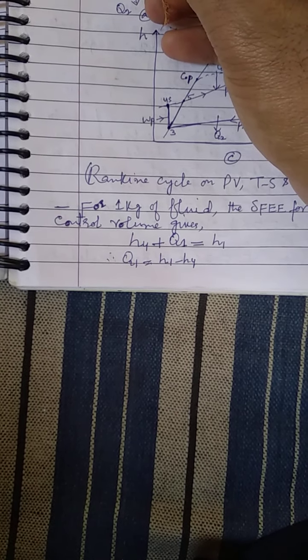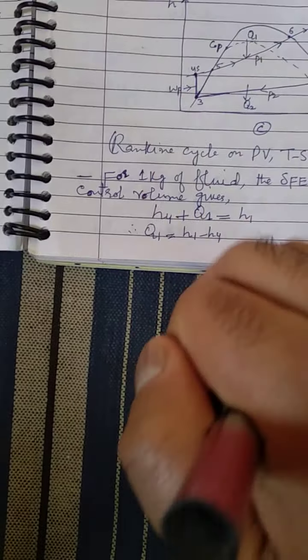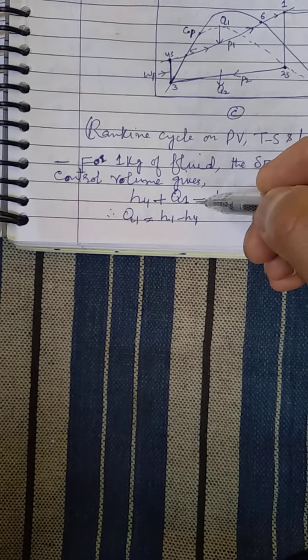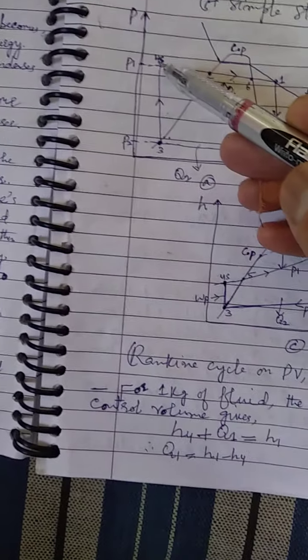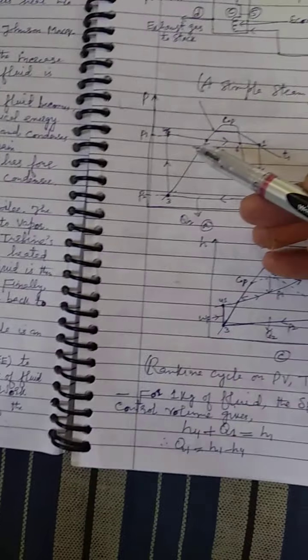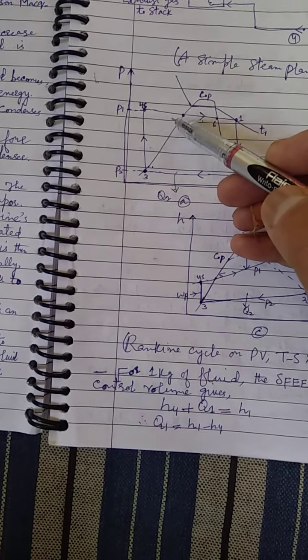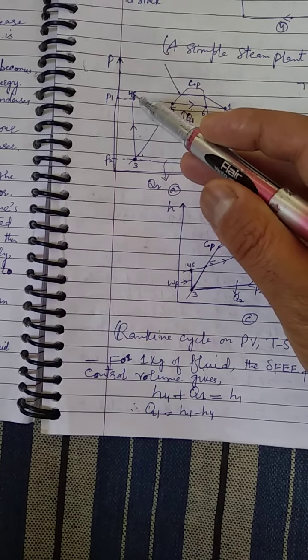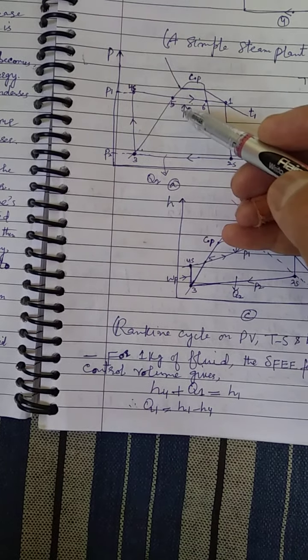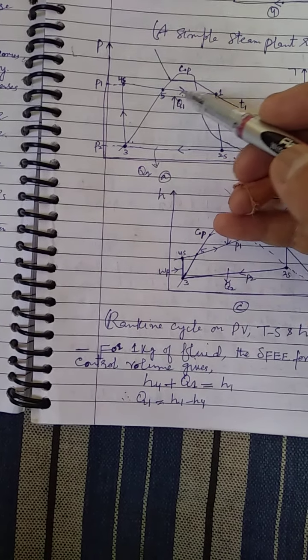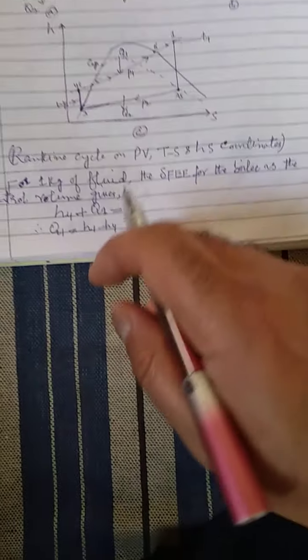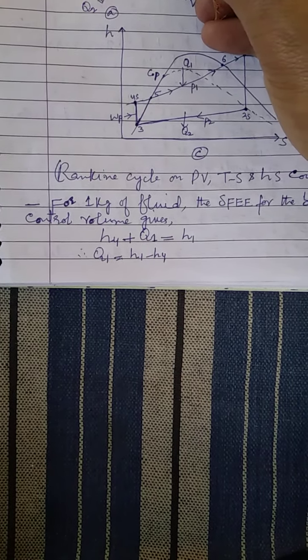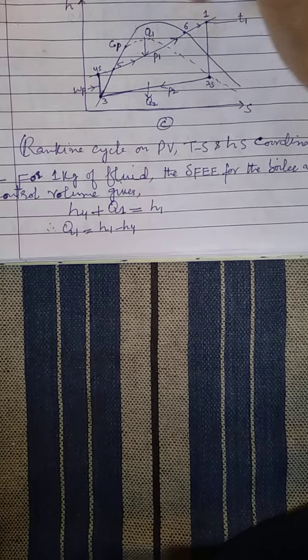In the boiler, when the liquid enters, the boiler starts work. The steady flow energy equation for the boiler gives: enthalpy at 0.4 plus heat applied from state 5 to 6 equals H1. That means enthalpy of the liquid at 0.4 plus heat entered into the boiler equals H1, which is the enthalpy of the steam coming out at 0.1, as shown in this diagram.